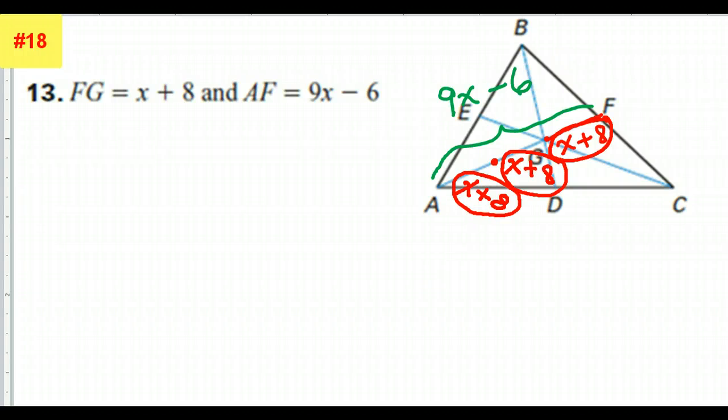If we're given the one small piece is x plus 8, that means all three pieces are x plus 8. So my goal is to make an equation between the red and the green. The green is the whole thing, so it should equal all these reds put together. Let's see how that looks. On the left side, I'm going to do the green, 9x minus 6.